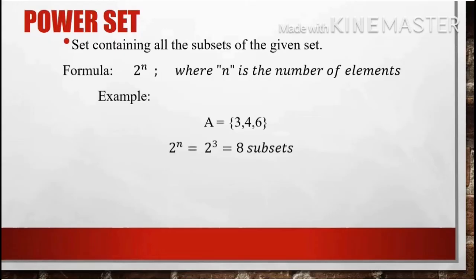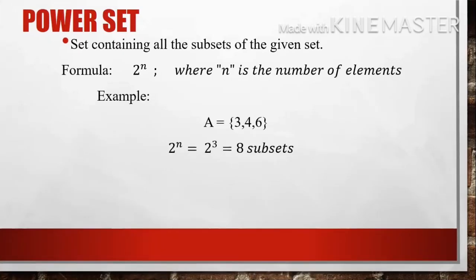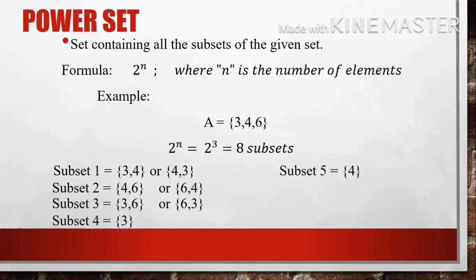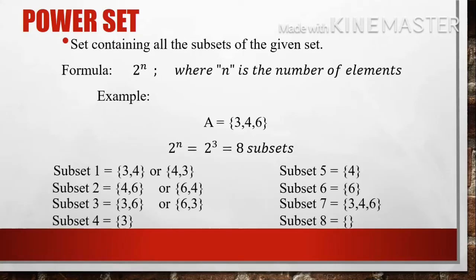The 8 subsets of set A = {3, 4, 6} are: subset 1 — {3, 4}, subset 2 — {4, 6}, subset 3 — {3, 6}, subset 4 — {3}, subset 5 — {4}, subset 6 — {6}, subset 7 — {3, 4, 6}, and subset 8 — the empty set. Take note that in the power set, both proper and improper subsets are included.